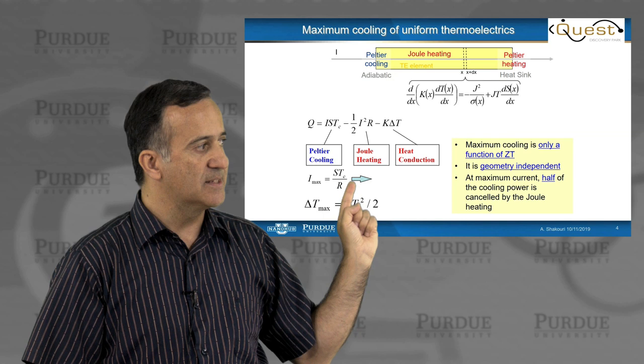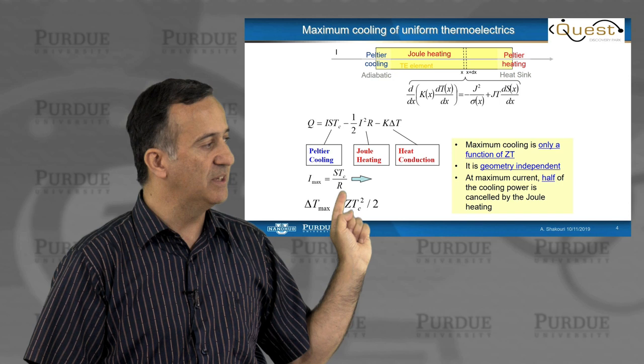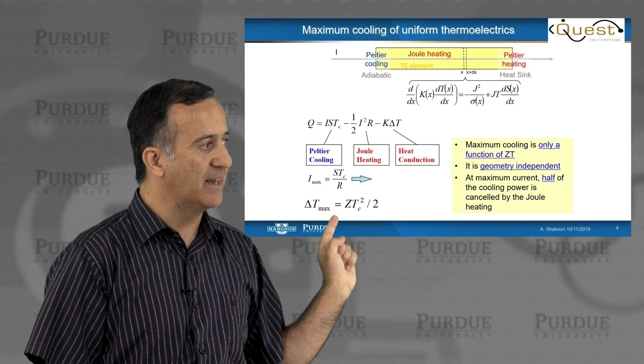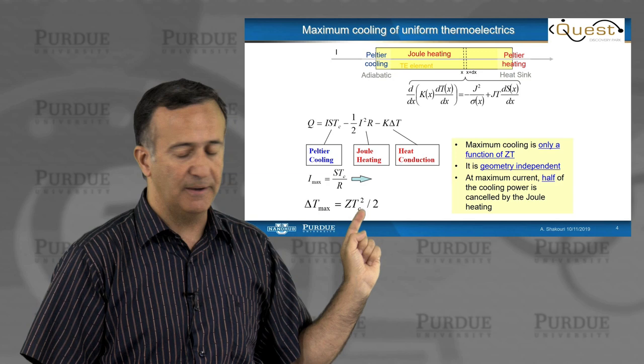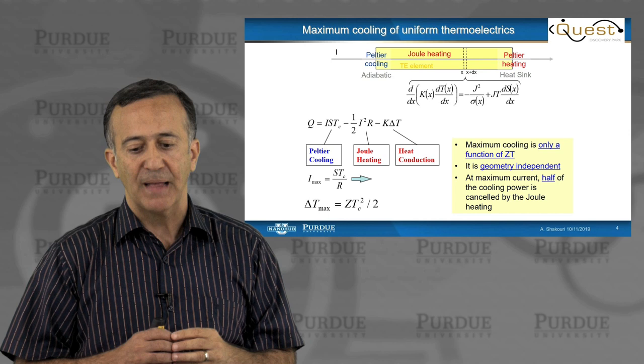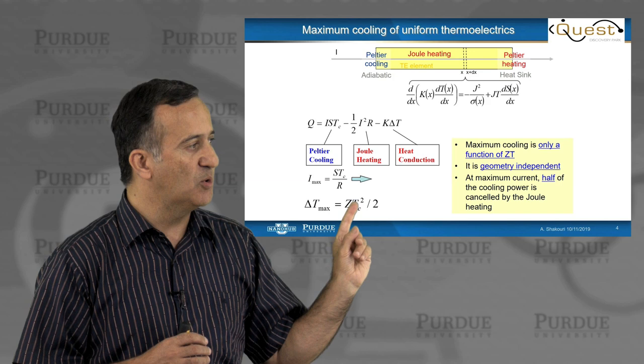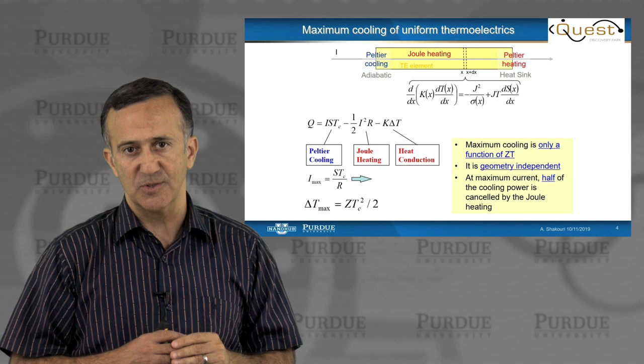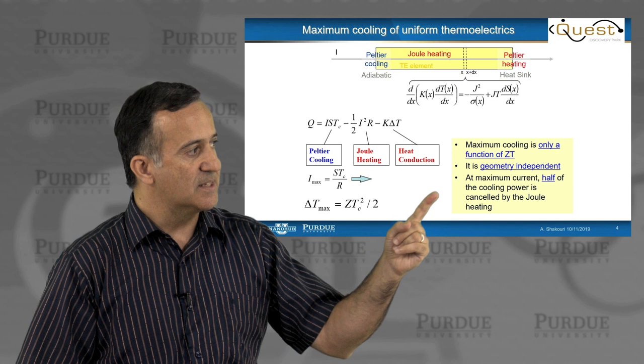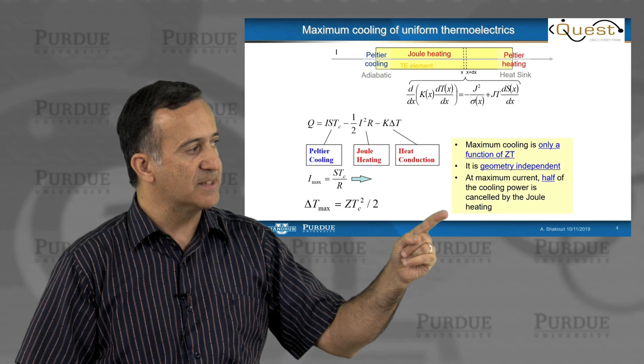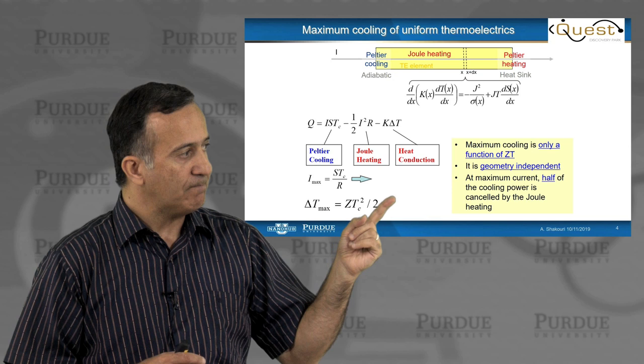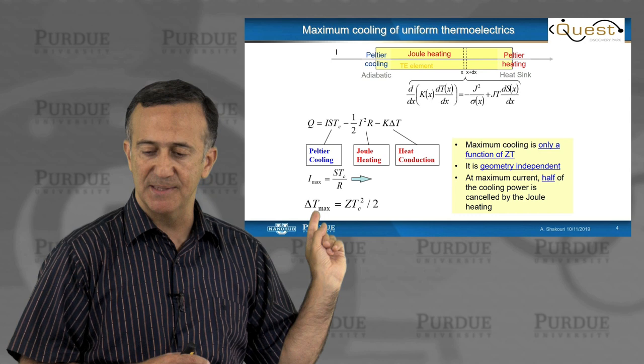We can optimize this for maximum cooling. That's what is called the maximum cooling condition. The optimum I is given here. And based on this, delta T max is ZT cold squared divided by 2. That's an important parameter because it tells you that for a thermoelectric element for cooling application, independent of geometry, maximum cooling is given just by the Z parameter. That is the famous Seebeck coefficient squared times electrical conductivity divided by thermal conductivity. This is geometry independent. And at maximum current, half of the cooling power is cancelled by the joule heating.